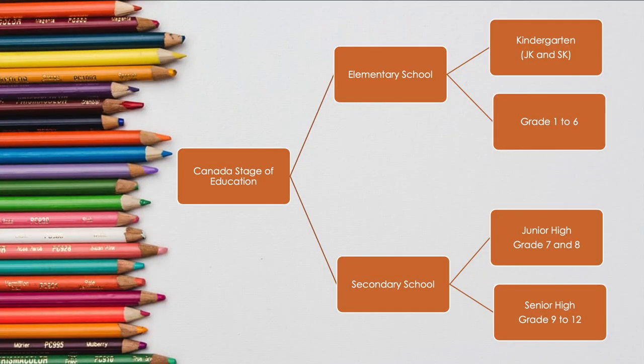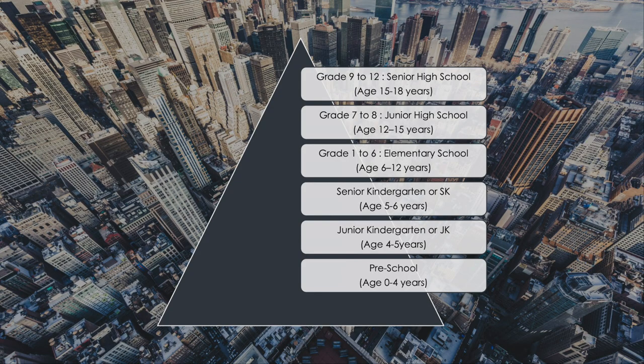The schooling system in Canada has two stages: secondary education and elementary education. Elementary education is grade 1 to grade 6. Secondary education is grade 7 to grade 12. This is the hierarchy.